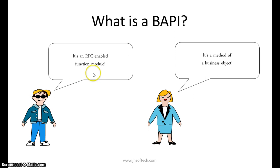What we do is create a function module in SE37 or the function builder — you can also do it from SE80. From the function builder, we create a function module and make it RFC enabled. Then we connect this function module with the business object in SW01 transaction, where we attach this RFC enabled function module to the business object as a method. When we create a business object and get into it, there is an option called 'method' where we add this RFC enabled function module, making it a complete business object repository-enabled BAPI that can be used as an interface.